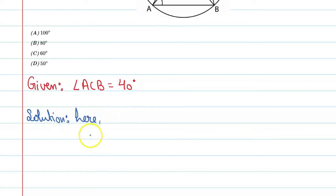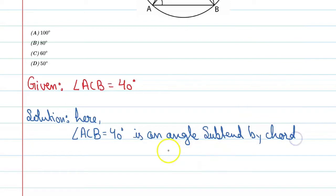Here, angle ACB is equal to 40 degrees and it is an angle subtended by chord at point C.